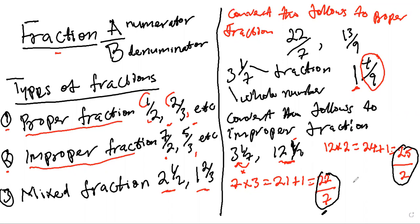So these two results are in improper fraction. We obtained these in our attempt to reverse mixed fractions to improper fraction. So it's vice versa. So we're going to end the lesson here. Thank you everybody. Please make sure you like and subscribe to my channel, and if you have any question, leave it in the comment section below. Thank you so much. See you next time. Have a great day.